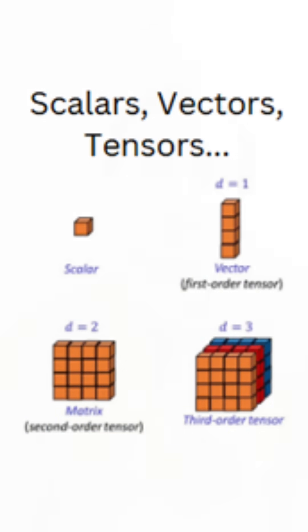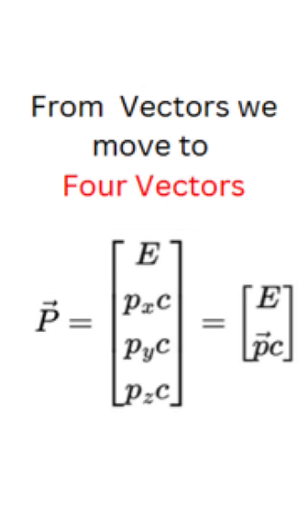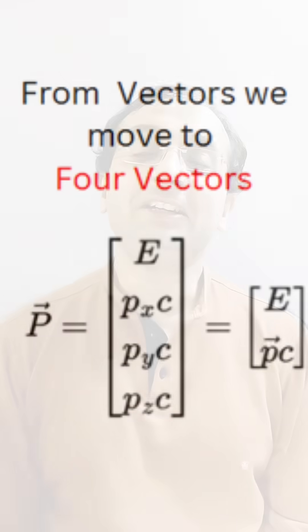Scalars are single quantities like temperature. Then we move to vectors, which have magnitude and direction. But from vectors we don't move directly into tensors — first we get something called a four-vector. This is the concept where we have time as one component and x, y, z as the space components. Special relativity explores four-vectors, which are an extension of normal vectors.